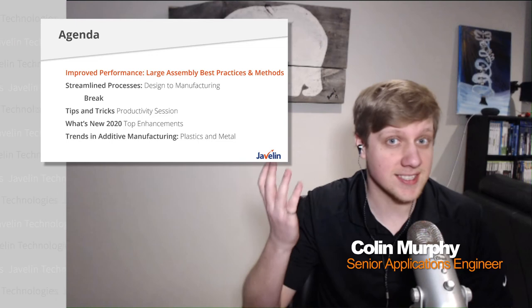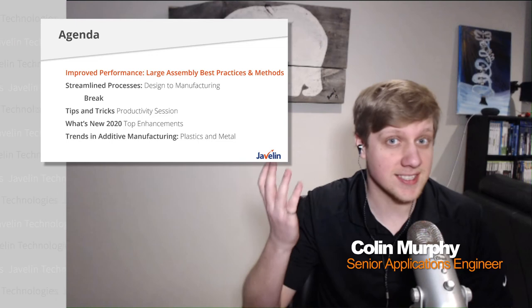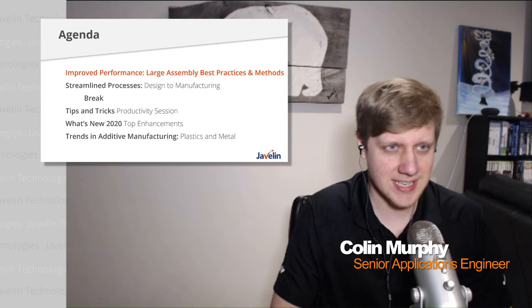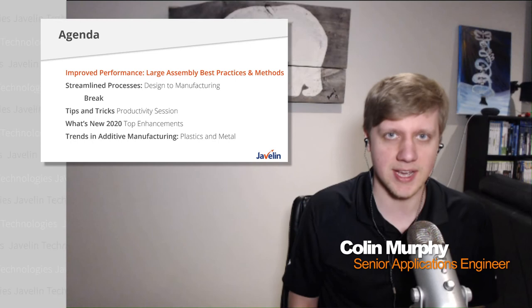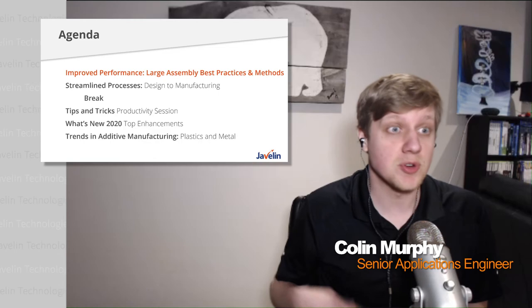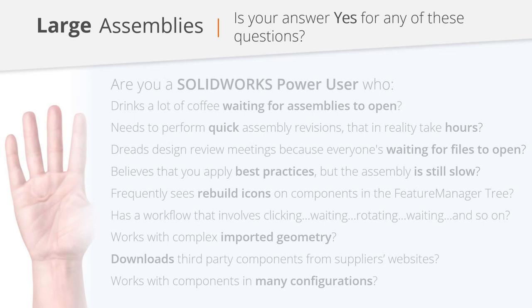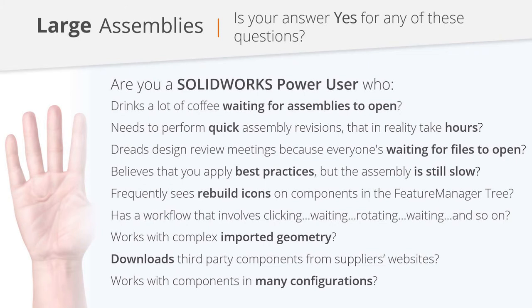Thanks so much, Alex. My name is Colin Murphy and I am an applications engineer here at Javelin Technologies. Part of my job is visiting our customers and asking them what's slowing them down and where we can help them become faster or more efficient. One of the most common things I hear is that they're experiencing trouble when working with large assemblies. This large assembly description can mean a lot of different things, but I've compiled a list of what the top items are that SOLIDWORKS power users raise with me when I visit them.